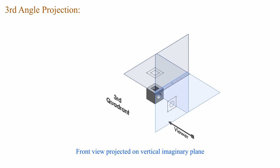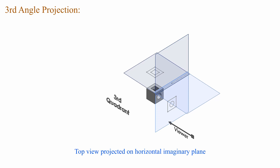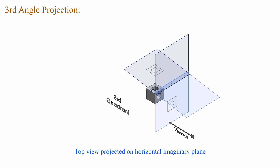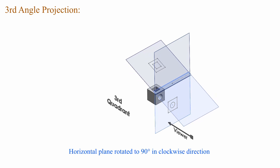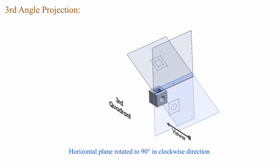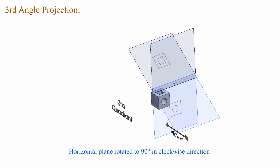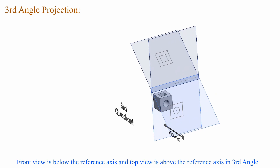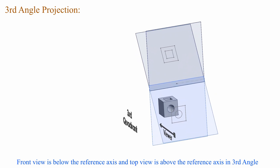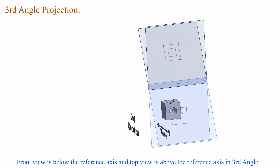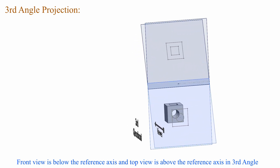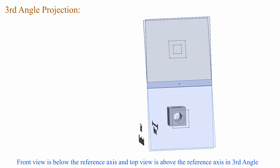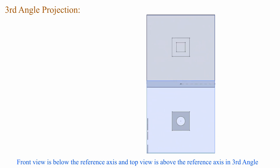In third angle projection, the front view is projected on the vertical imaginary plane and the top view is projected on the horizontal imaginary plane. The horizontal plane is rotated 90 degrees in the clockwise direction. The front view is below the reference axis and the top view is above the reference axis.